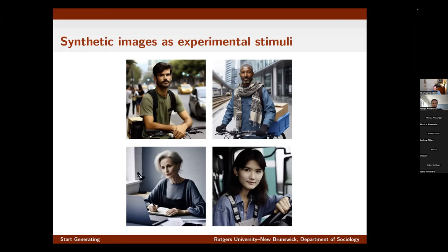These types of results show we can potentially generate higher-fidelity representations that could have applications in experimental contexts. Of course there's more work to be done — do these images accurately represent people in terms of their characteristics in ways meaningful to experimental subjects? And there are things like a criminal record that we can't replicate in images. I'm not arguing this totally replaces traditional box conjoint designs, but as others have argued it potentially creates more opportunities for visual stimuli in experiments.